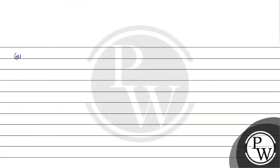Option D is 1×10⁻¹⁰ moles of copper. We take the atomic mass of copper, which is 63.5 g/mol. So the mass will be 63.5×10⁻¹⁰ grams.